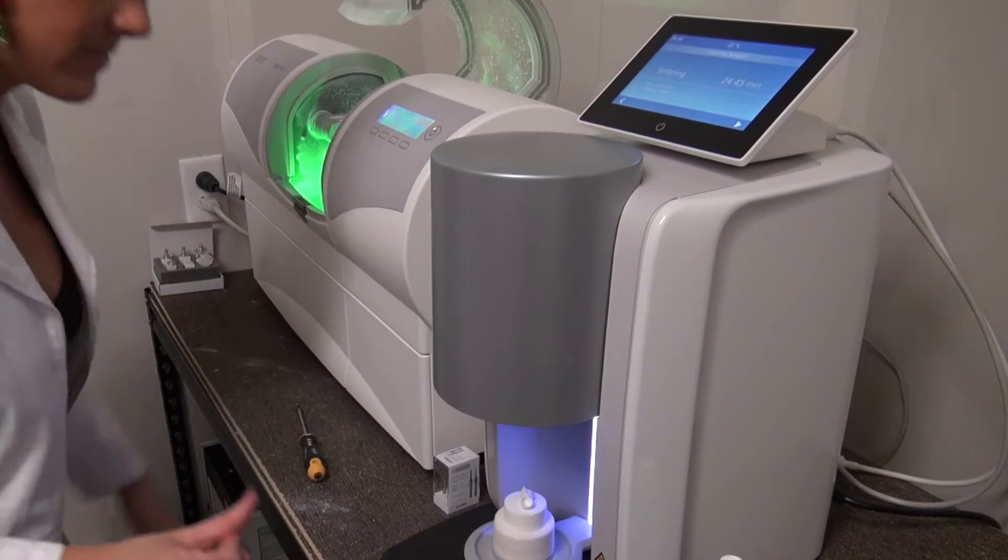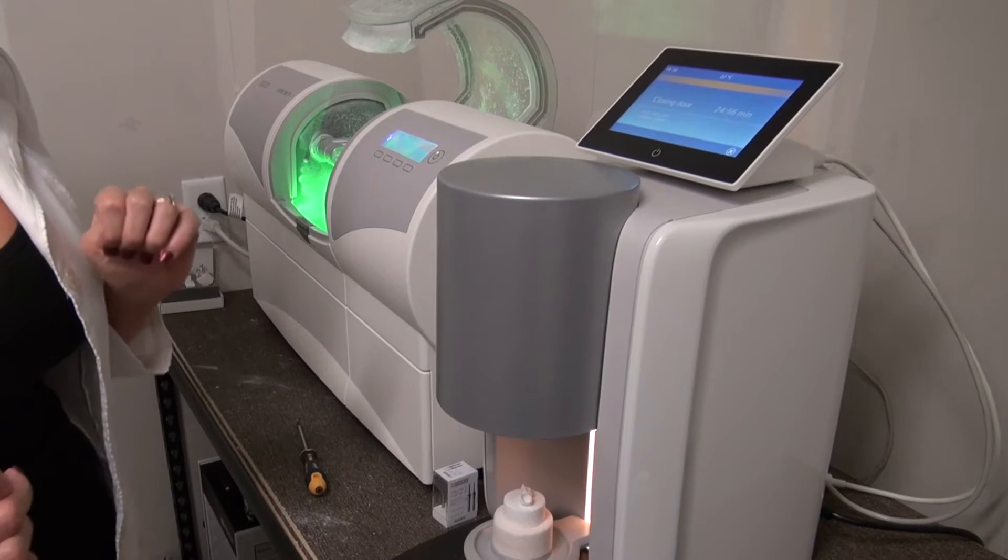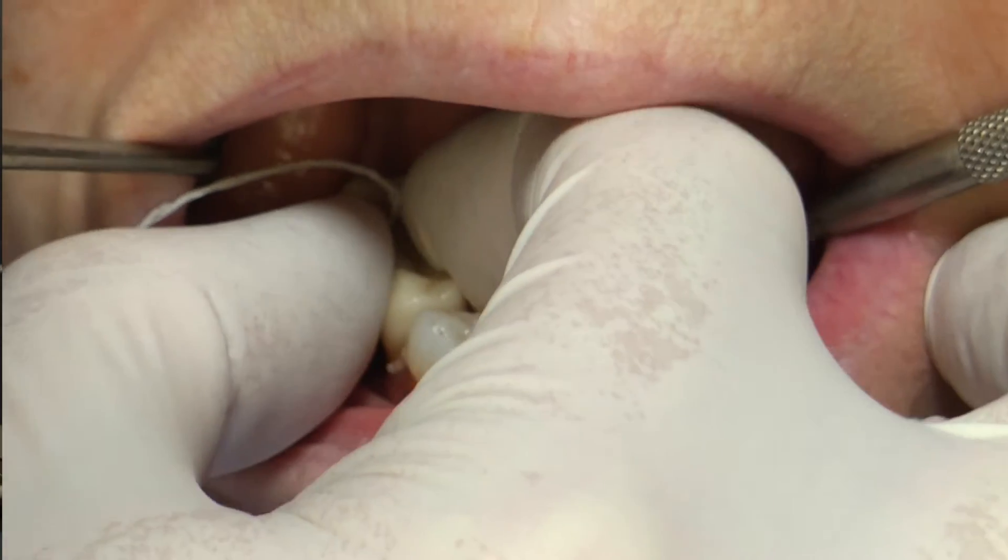The new way of doing zirconia now is so user-friendly. It's easy. It literally tells you from one step to the next what to do. It dry mills, goes straight to the sintering oven, then you have your glaze cycle. And you know what? The little bit of time it adds, you're saving on the other end because you can traditionally cement these in.